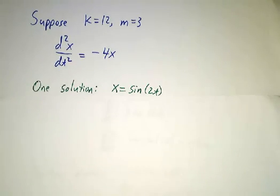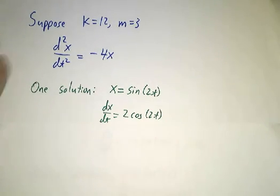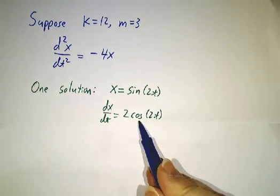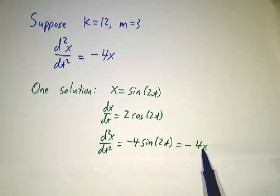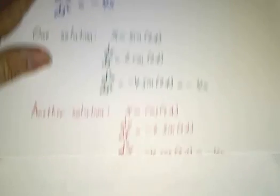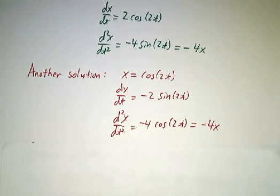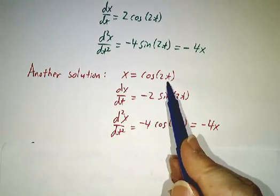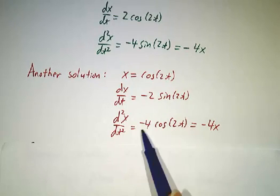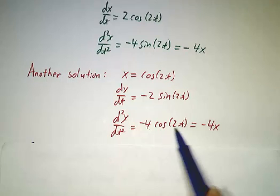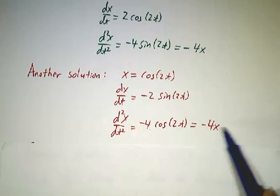Now, you can check that sin of 2x is a solution to that, because the derivative of sin of 2x is 2cos, and the derivative of that is negative 4 sine, and that's minus 4x. You can also check that cos of 2t is also a solution, because the derivative of that is minus 2 sine of 2t, and the derivative of that is negative 4 cos of 2t, and that's minus 4x.